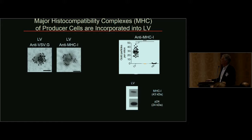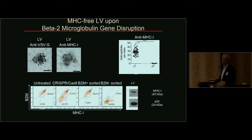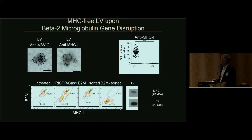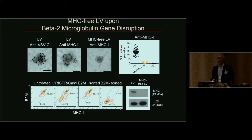One concern is that most of these are human proteins, but some are not invariant. We became concerned about major histocompatibility complexes, which are highly polymorphic and could represent allo-antigens present on the membrane of the virus. Electron microscopy analysis showed viral particles covered with the expected VSV-G envelope, but also a significant signal for MHC class I complexes. Western blot of purified vector particles also detected MHC. To address this, we used gene editing to disrupt the beta-2 microglobulin gene in the producer cell — an essential component for MHC expression on the cell surface.